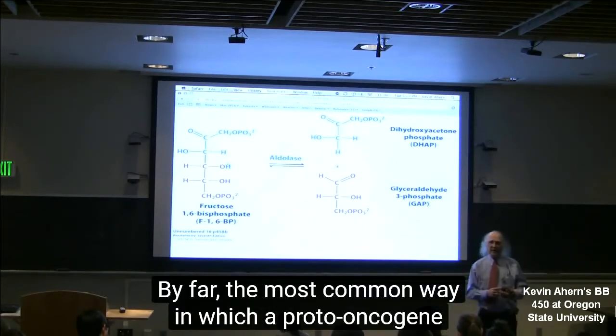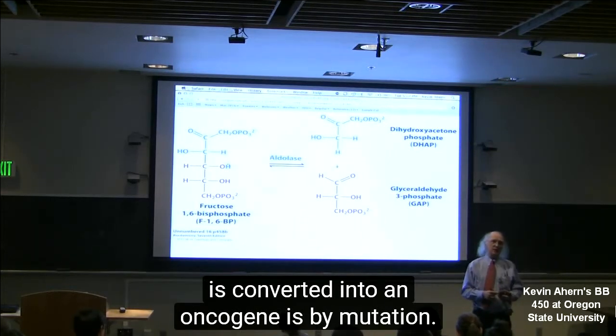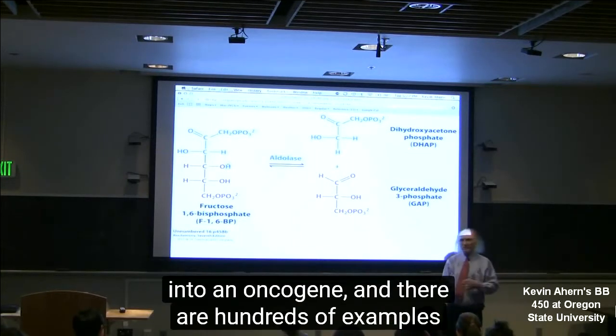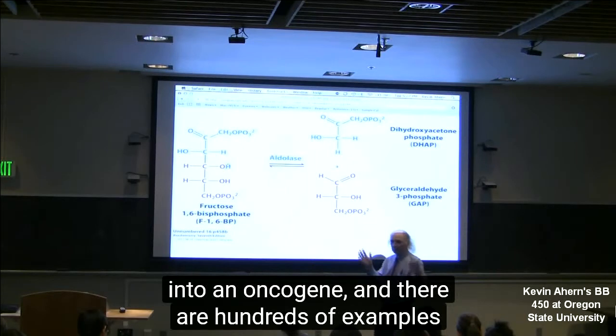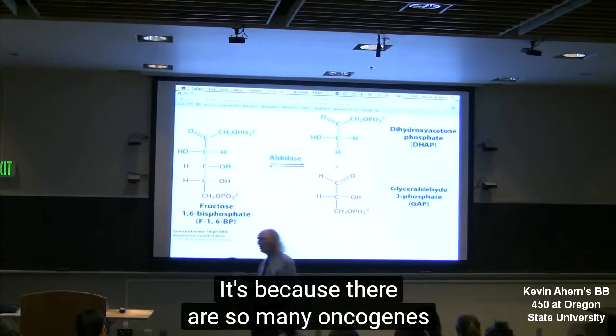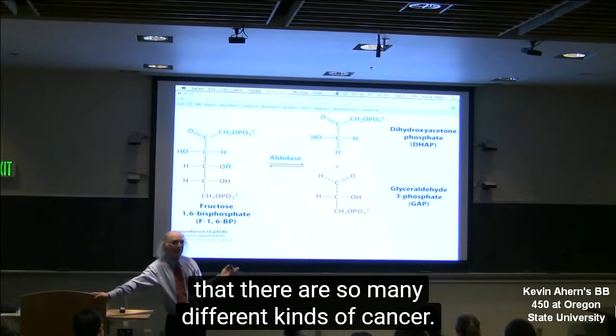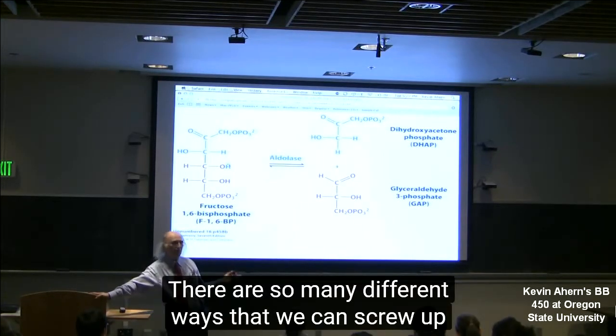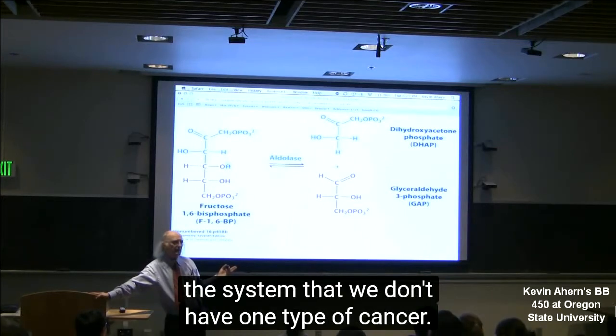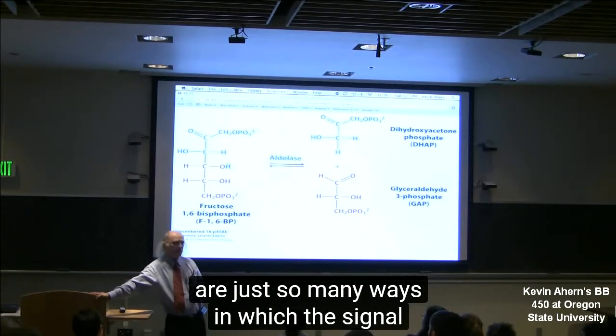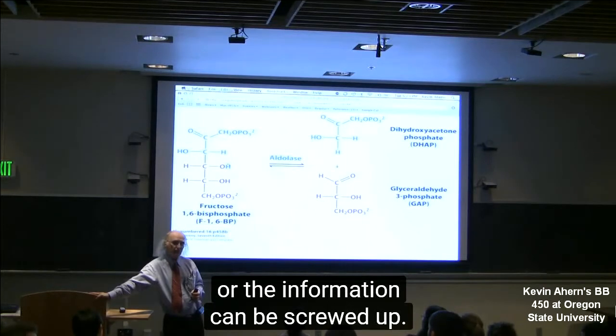By far the most common way in which a proto-oncogene is converted into an oncogene is by mutation. It takes mutation to convert a proto-oncogene into an oncogene, and there are hundreds of examples where that can happen. It's because there are so many oncogenes that there are so many different kinds of cancer. There are so many different ways we can screw up the system that we don't have one type of cancer, we don't have one cure for cancer, because there are just so many ways in which the signal or information can be screwed up. Does that help?